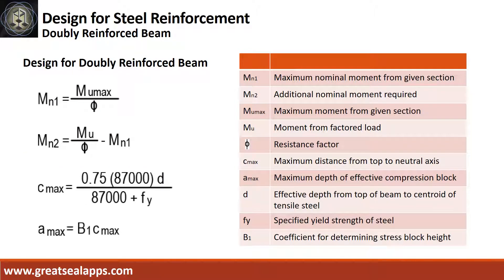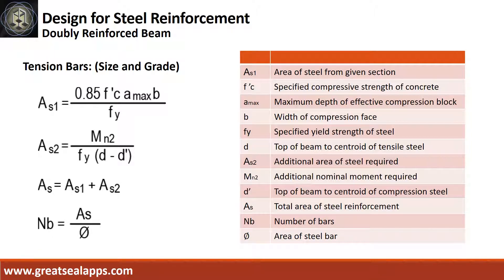For doubly reinforced beam design, first get the maximum nominal moment from the given section, then subtract it from the nominal design moment to get the additional moment required. To solve for tension bars, first get the area of steel from the given section, as1, then the area of steel from the additional moment required, as2, and sum them up to get the total area of steel, as.